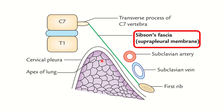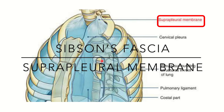Here we can see another view for a clearer conception of this topic. The lungs are removed on both sides and only the pleura is present. We can see the apical area, and the fascial structure here is the supra pleural membrane, also called Sibson's membrane. It attaches from the transverse process of C7 to the first rib, and it covers the apex of the lungs.